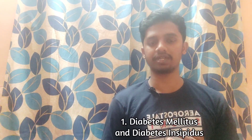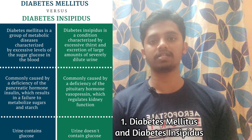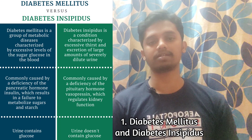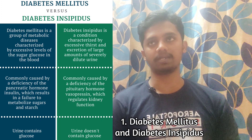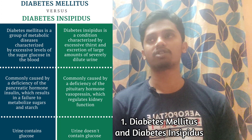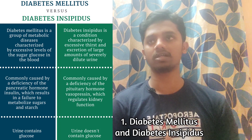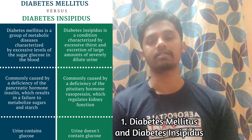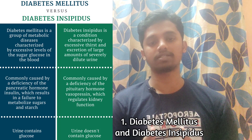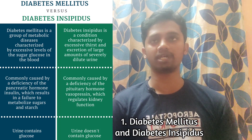Hello everyone! Today we have three questions and answers for you. The first one is Diabetes Mellitus and Diabetes Insipidus. We also have two differences and two similarities. Both are known as metabolic disorders in which there will be excessive flow of urine, or excessive output of urine. These two are metabolic disorders.